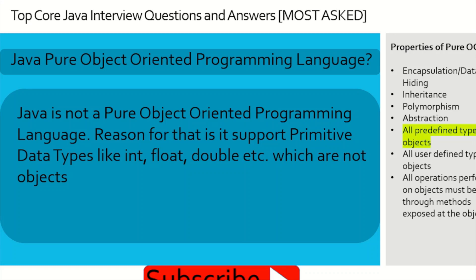The first question is: is Java actually a pure object-oriented programming language? The answer is Java is not a pure OOP language because it still supports primitive data types like int, float, double, etc., which are not objects. A pure OOP language must satisfy properties like encapsulation, inheritance, polymorphism, abstraction, and all predefined types must be objects. Java fails on that last property, so it cannot be considered a pure OOP language.